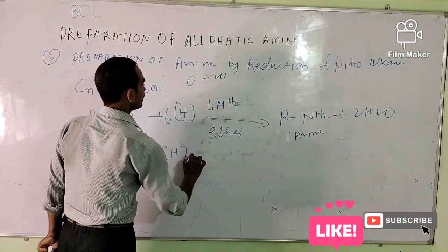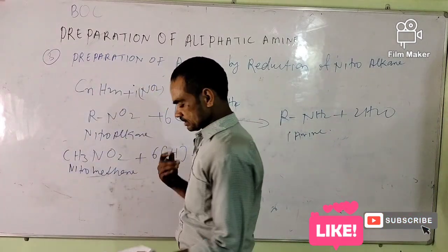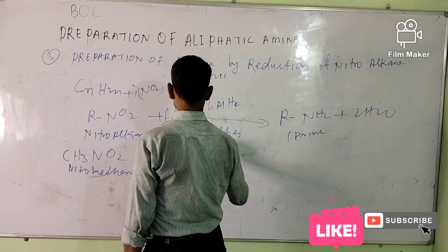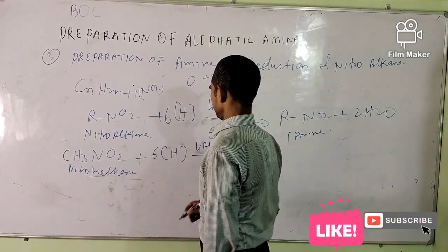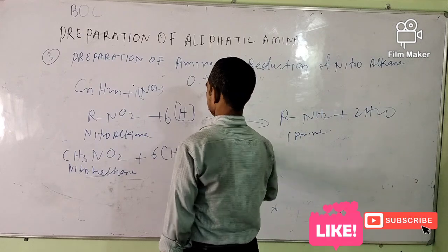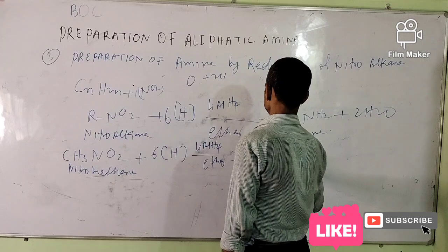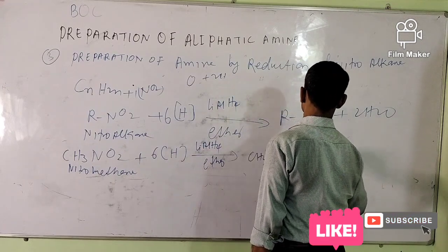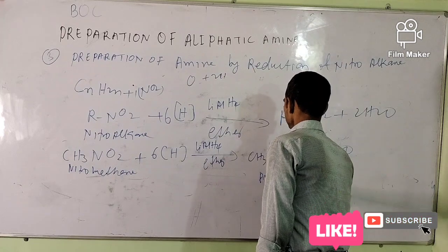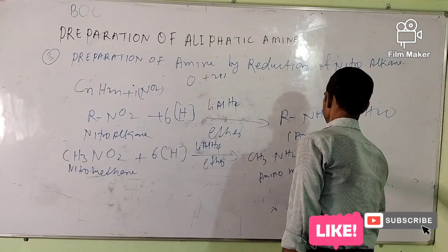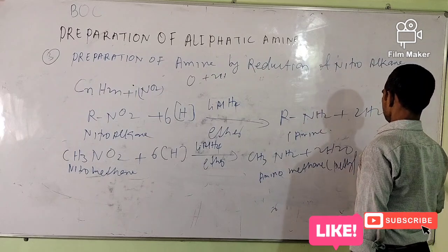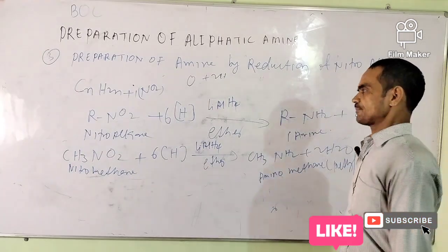6 hydrogen lete hain. Yeh reducing agent badal saktay hain — LiAlH₄ bhi le saktay hain — in presence of ether. Reaction karvaya ja raha hai ether mein. Yeh ho jayega CH₃NH₂ aur plus 2H₂O. Isko kehte hain aminomethane, aur common name hoga methylamine. Yeh primary amine ban gaya hai.